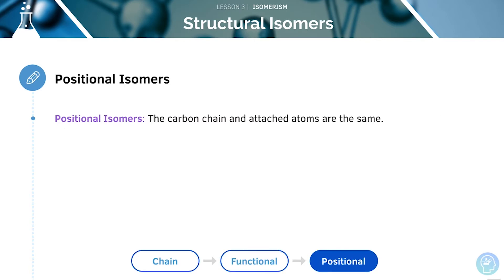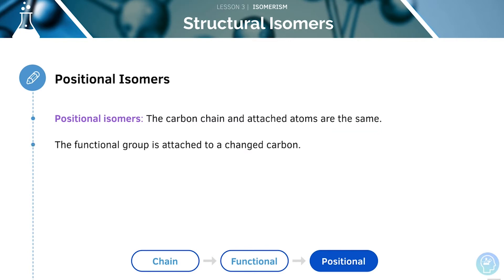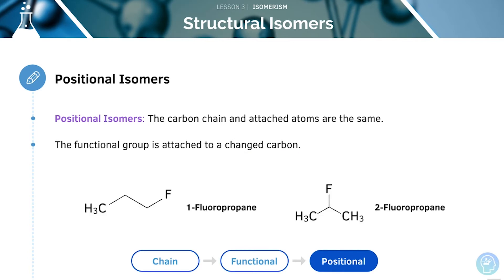Positional isomers mean that the carbon chain and the attached atoms are exactly the same. However, the functional group will be attached to a different carbon. As we can see here, we have 1-fluoropropane and 2-fluoropropane.